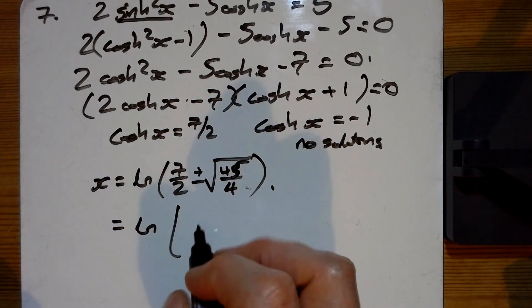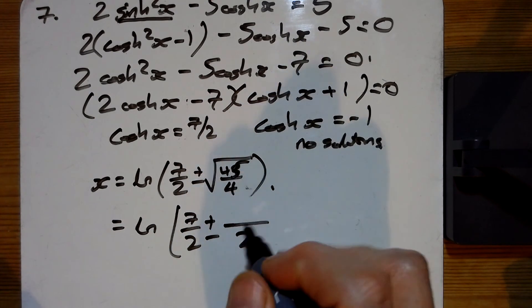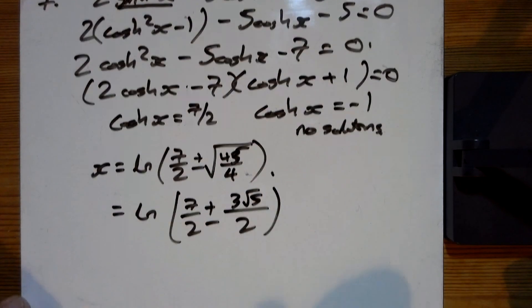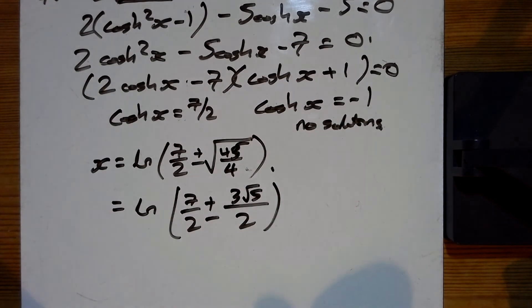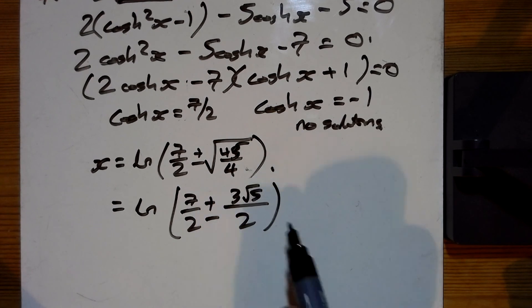That's going to be simplified - that is 9×5, so 3√5/2. I'll leave it there. So x = ln(7/2 ± 3√5/2). It's plus or minus because it's cosh.